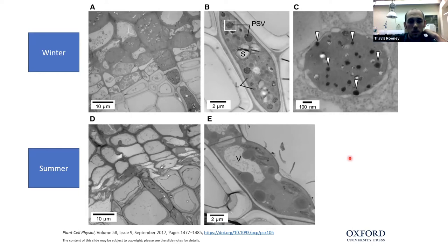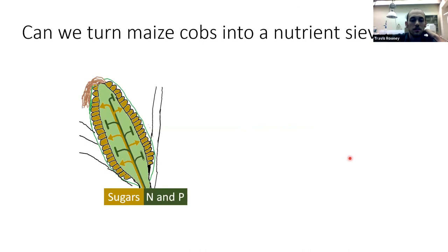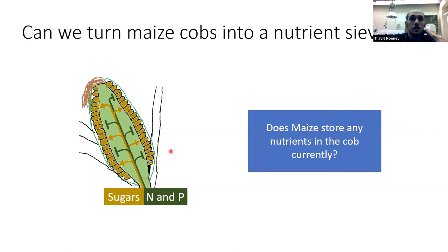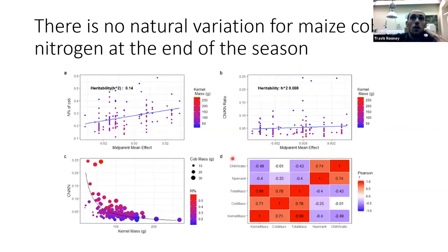Can we turn maize cobs into nutrient sieves, intercepting and storing nitrogen and phosphorus in the cob and preventing its loading into the kernels? As a concept it seems like this idea would work, but further research and experiments would need to be performed. This also begs the question: does maize store any nutrients in the cob currently at the end of the season? The short answer is no — maize does not have any natural variation for cob nitrogen at the end of the season, and we would expect the same to be true for phosphorus.